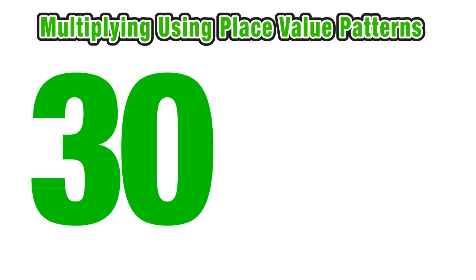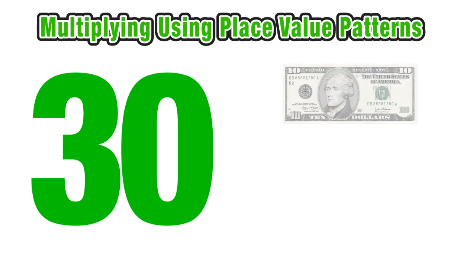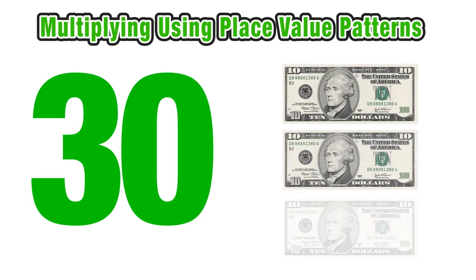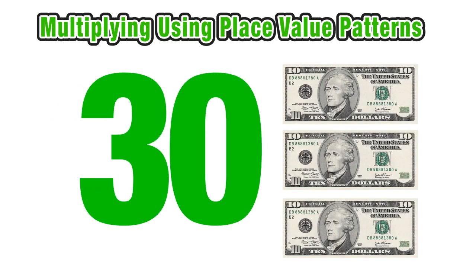We are going to continue to look at the number 30 since it is a multiple of 10. We can say that 30 is equal to 10 times 3. Or in terms of money, we can think of $30 as 3 ten-dollar bills.